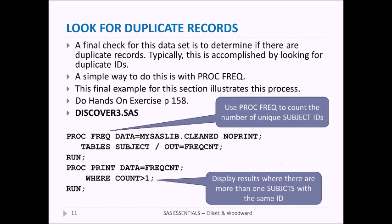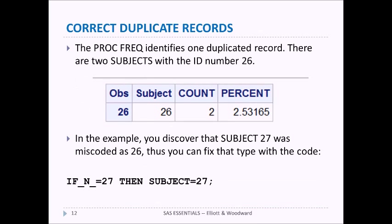We also want to look for duplicate records, and we can do that with the code in discover3.sas on page 158. Opening that up, you can see it runs a PROC FREQ on the cleaned data set for the subject variable and outputs the information to a file called frequency_count. This gives us how many subject IDs there are, and then we look for subject IDs where the count is greater than one — meaning there's a duplicate. Running that, we see that subject number 26 had a count of two. Research revealed that number 27 was miscoded as 26, so we use an IF statement to recode that value to 27 and clean up the problem.